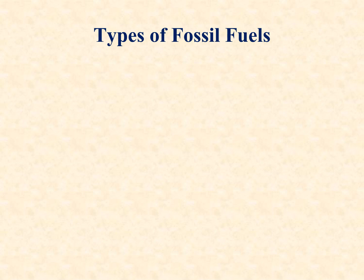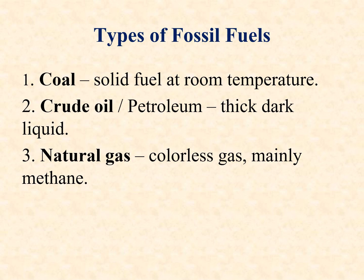Let's look at different types of fossil fuels. What are some of the types of fossil fuels that you know? Number one, coal — coal is a type of fossil fuel which is solid, a solid fuel at room temperature. Then number two, crude oil or petroleum, which is a thick dark liquid. Then we have natural gas, which is a colorless gas, mainly methane.